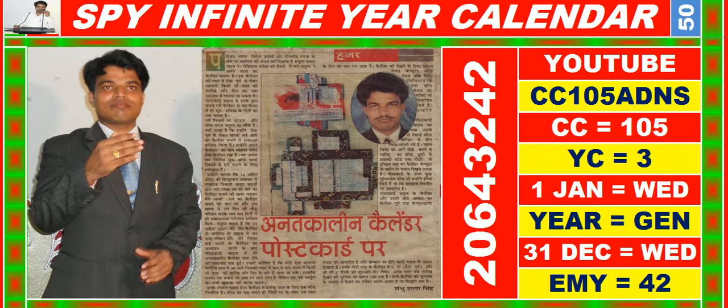In this video you are watching SPY Infinite Year Calendar for the year having calendar code equal to 105. You may also search it on YouTube by CC 105 ADNS.